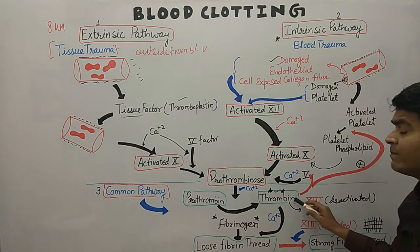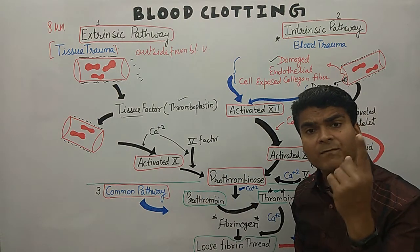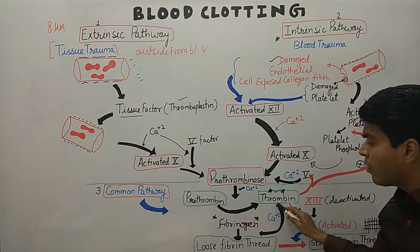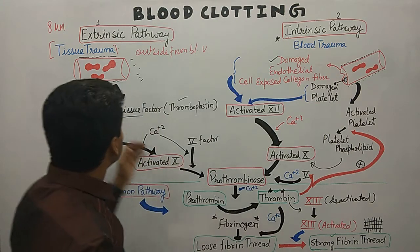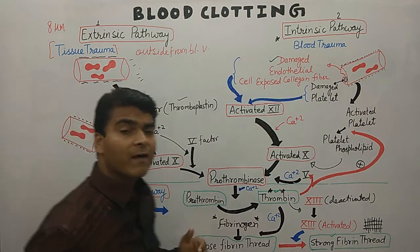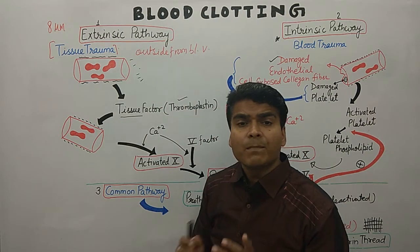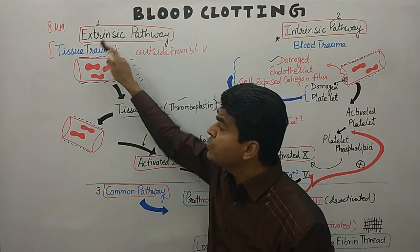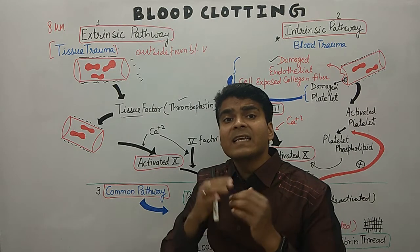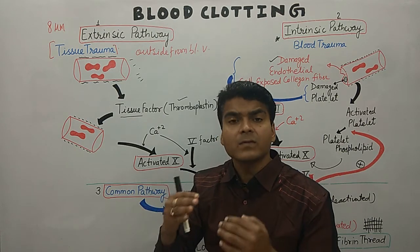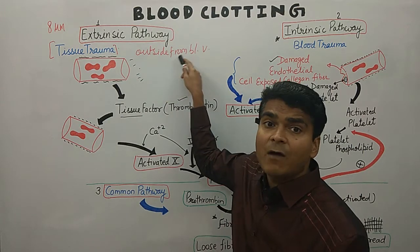Then our target is to form thrombin. In the common pathway, we do two things: first, formation of thrombin, and second, formation of strong fibrin thread. Now just look at the extrinsic pathway. Why is it called the extrinsic pathway? Because the activation process starts from tissue trauma, and this tissue trauma does not occur within the blood vessel — it is a mechanism outside of the blood vessel. That's why it is named the extrinsic pathway.